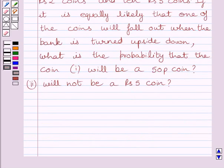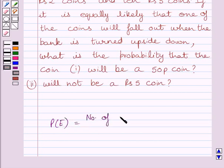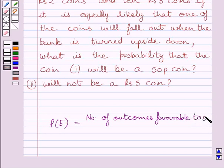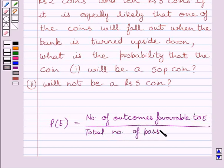First of all, let us understand that probability of occurrence of an event E, denoted by P(E), is defined as number of outcomes favorable to E upon total number of possible outcomes. Now this is the key idea to solve the given question.